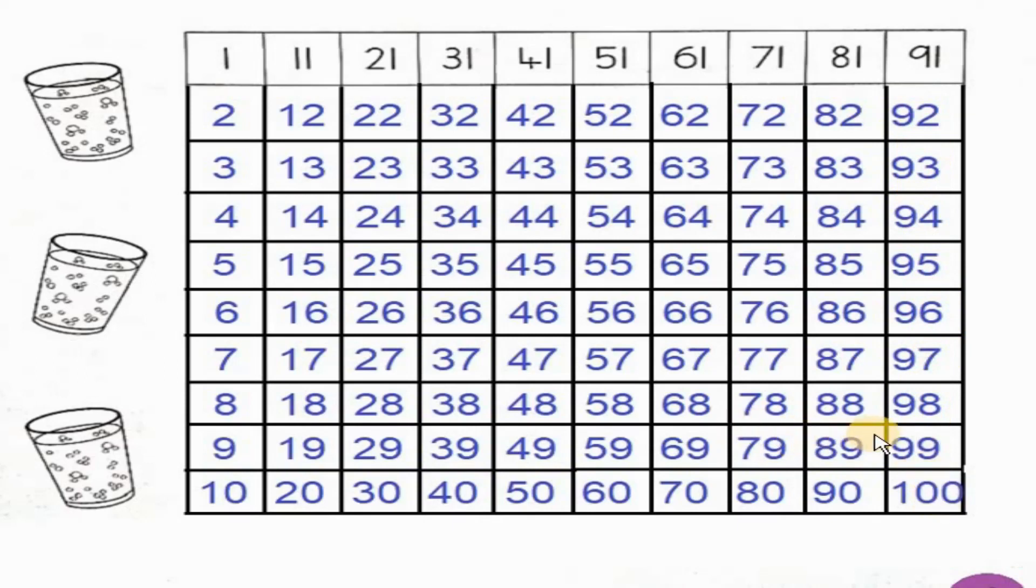Now the next activity on this page is to count backwards. You should cover each column and then try to count backwards. For example, you should cover this column and then count from 100 to 91. 100, 99, 98, 97, 96, 95, 94, 93, 92, 91.